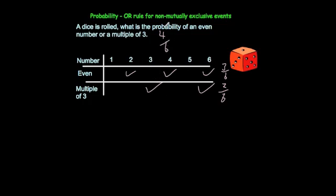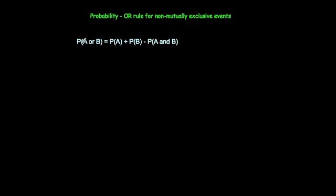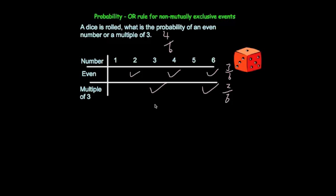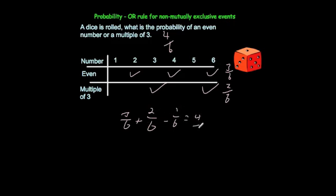We need to change the method for non-mutually exclusive events. The formula is: P(A or B) = P(A) + P(B) − P(A and B). For this example: P(even) = 3 sixths, P(multiple of 3) = 2 sixths, and P(even and multiple of 3) = 1 sixth, since only 6 is both. So 3 sixths plus 2 sixths minus 1 sixth equals 4 sixths, which is our answer.